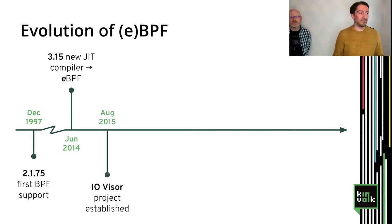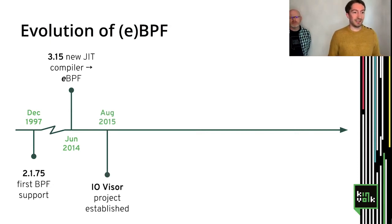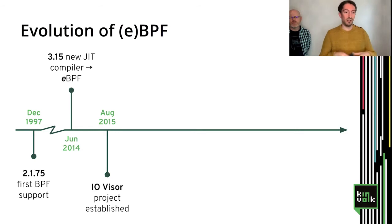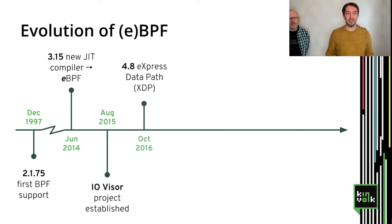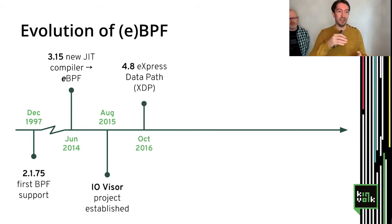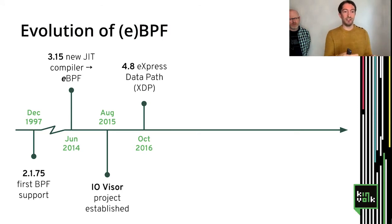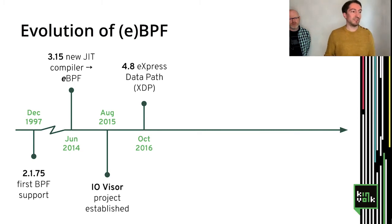A bit later, in 2015, we have the IOVisor project established, coming initially from PlumGrid technology, then moved under the Linux Foundation umbrella. In 2016, we have XDP — Express Datapath — the idea being to apply the BPF program very early in the network stack, right at the NIC ideally, so we can filter packets and block unwanted traffic, making it very fast.